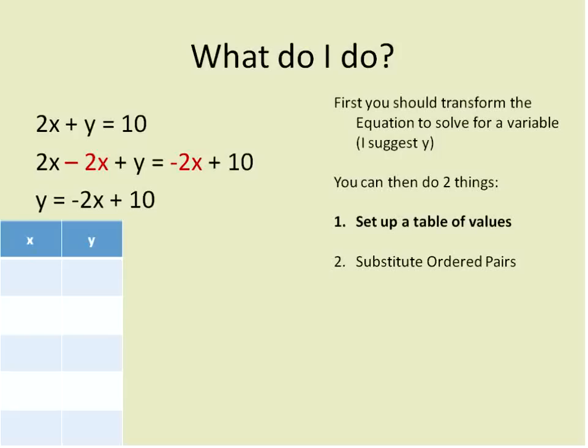A table of values is a table like this that has a list of x values and a list of y values. So you're basically going to say, if I put in an x value into this equation, what do I get for my y value? You can pick any values you want for x. You can put in negative 1,000. You can put in fractions. You can put in decimals.